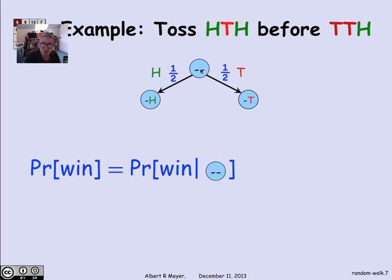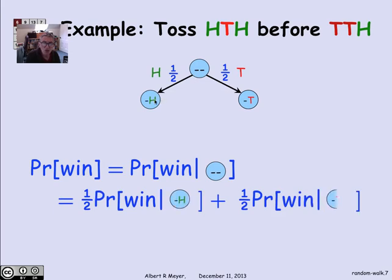But the probability that I win starting here is simply the probability that I win at starting at the state nothing H, or the probability that I win at the state started nothing T, with the two probabilities weighted equally, since this is a fair coin. And there's a 50-50 chance of going each way. That is, the probability of winning given no prior tosses is half the probability of winning if the first toss is an H, plus half the probability of winning if the first toss is a T. This is just an application of the law of total probability.